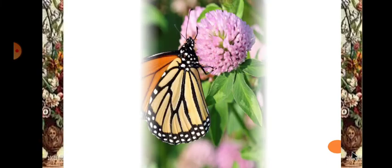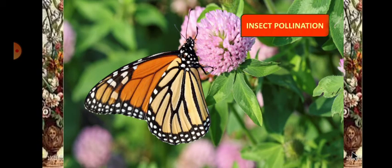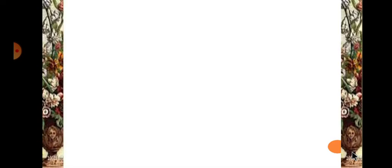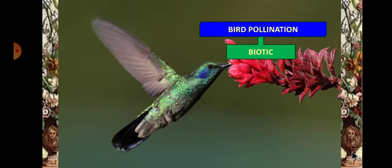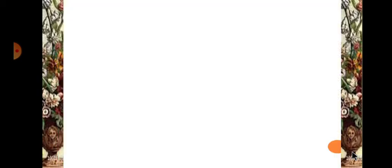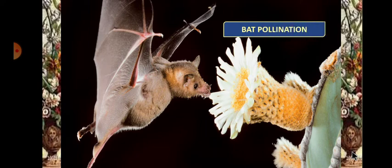This is a butterfly — pollination through insects is called entomophily, a biotic type of pollination. Through birds, as we just understood, it is called ornithophily, also a biotic agent. Through bats it is called chiropterophily, also a biotic agent that brings about pollination.